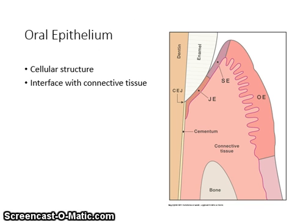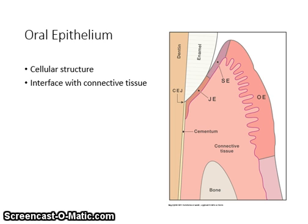The oral epithelium covers the outer surface of the free gingiva and attached gingiva. It extends from the crest of the gingival margin to the mucogingival junction. The oral epithelium is the only part of the periodontium visible to the unaided eye. It may be keratinized or partially keratinized, also known as para-keratinized. Keratin is a tough fibrous structural protein that occurs in the outer layer of the skin and oral epithelium. In health, the oral epithelium joins with the connective tissue in a wavy interface with epithelial ridges.